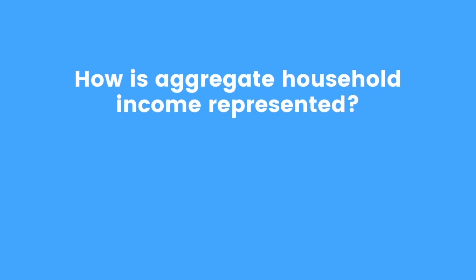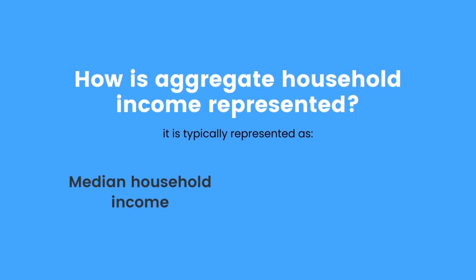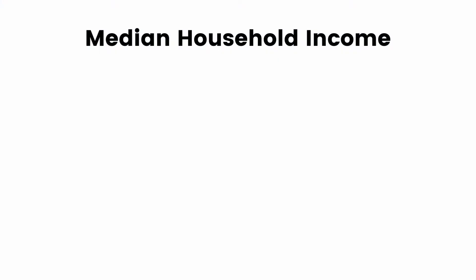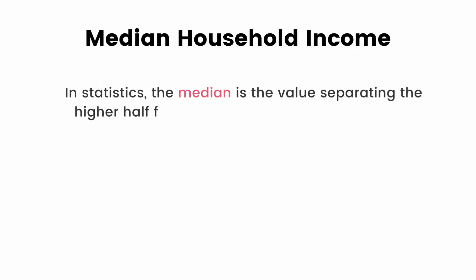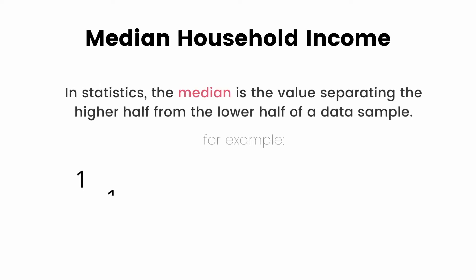How is aggregate household income represented? It is typically represented as either median household income or mean household income. Let's look at the difference between the two. Starting with median household income — in statistics, the median is the value separating the higher half from the lower half of a data sample.